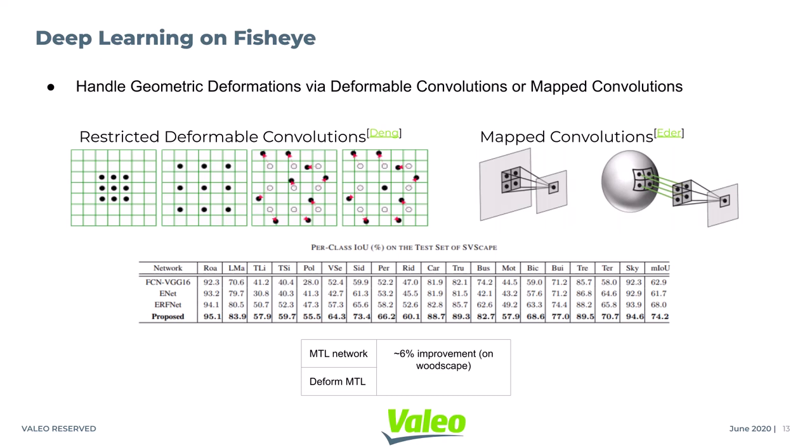We tested deformable convolutions as it is purely data-driven, and our dataset consists of data captured from different car lines with quite different extrinsics and intrinsics. In restricted deformable convolutions, others have shown around 10% performance improvement on distorted Cityscapes. On our dataset with standard deformable models, we have seen around 6% improvement in performance.